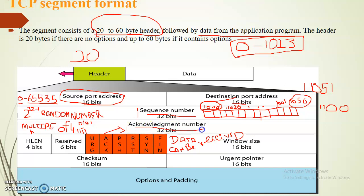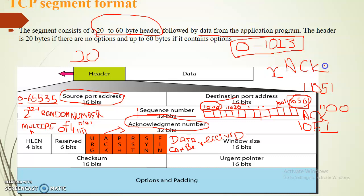Then there is the acknowledgement number. The acknowledgement number is sent by the receiver to acknowledge that data has been received. For example, if a segment delivers bytes 1000 to 1050, then the acknowledgement number received will be 1051 — that is, last byte received plus 1. If the last byte received is x, then the ACK will be x+1. The acknowledgement number is checked only when the ACK flag is true, which we will discuss after the discussion of header length.